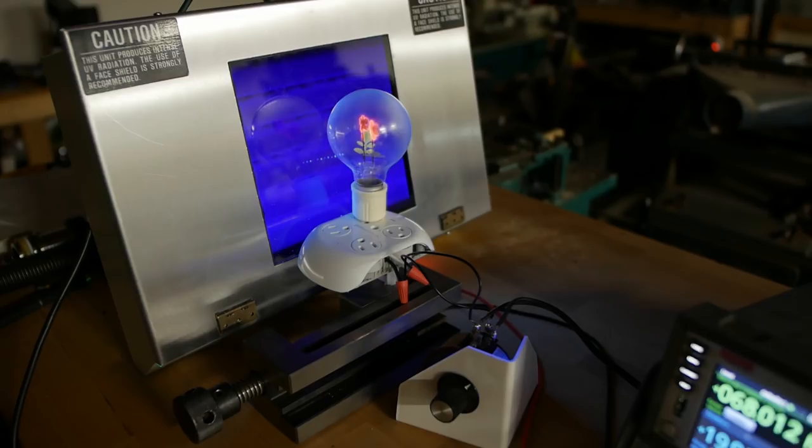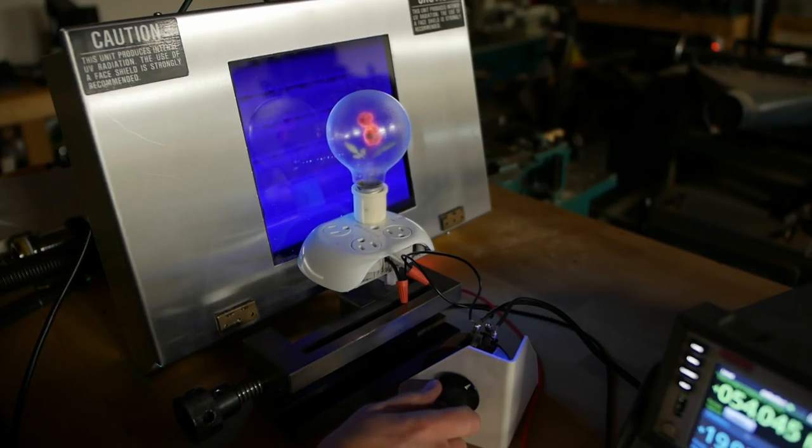The reason I need the Variac is that the voltage has to be almost high enough to get the neon bulb burning, but not quite high enough to actually get it started, because we want the ultraviolet light to be the thing that pushes it over. So the adjustment is really sensitive.